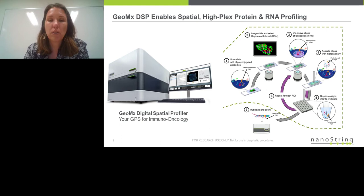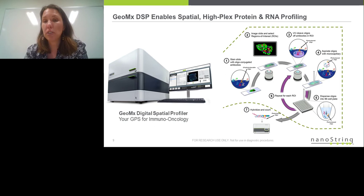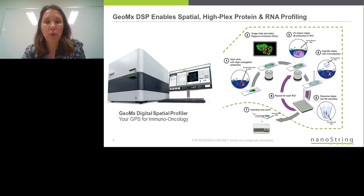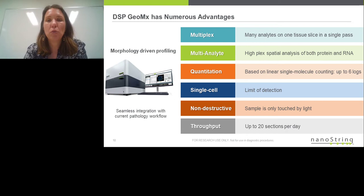The workflow is represented on this slide, where you can see the instrument on the left and a workflow diagram on the right. In step one, we stain the tissue sample with the cocktail of oligo-conjugated antibodies and visualization markers, then image the tissue. We select regions of interest for profiling and expose those particular regions to UV light. That UV light cleaves the photocleavable linkers, and the DNA oligos attached via them are released into the supernatant. That supernatant is collected and deposited into a microtiter plate, where we hybridize it with NanoString detection reagents and read it out on our Encounter platform.